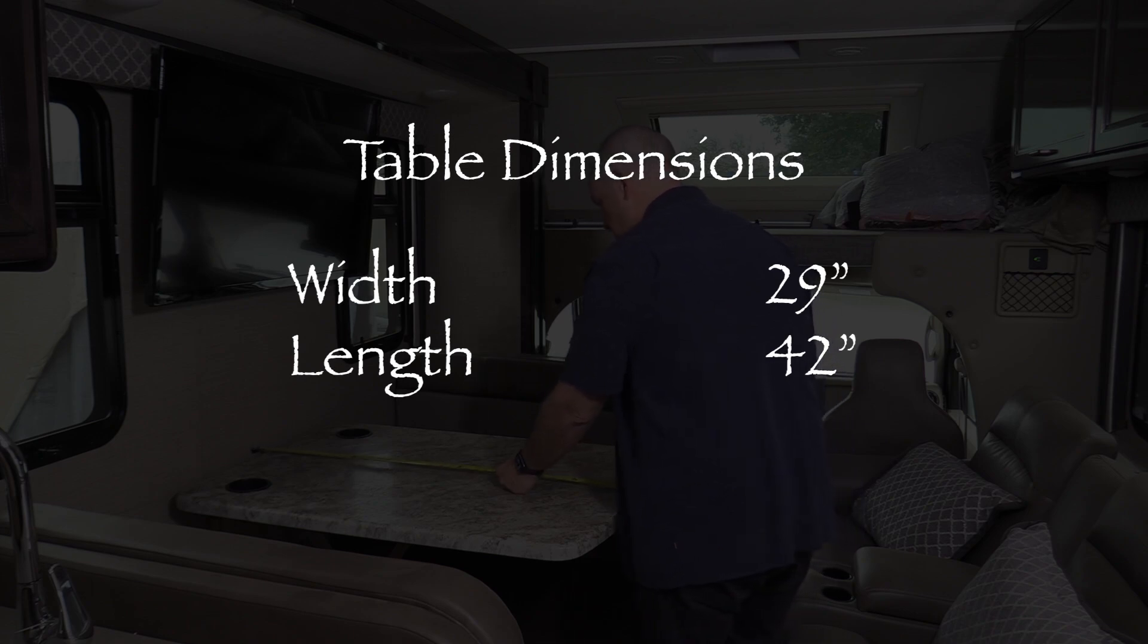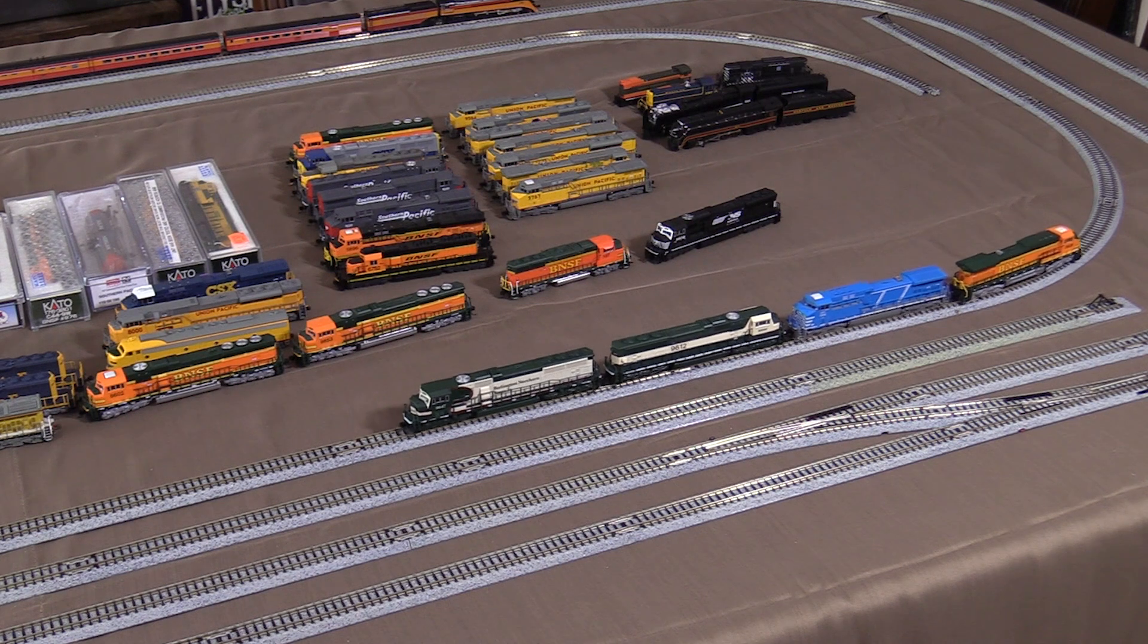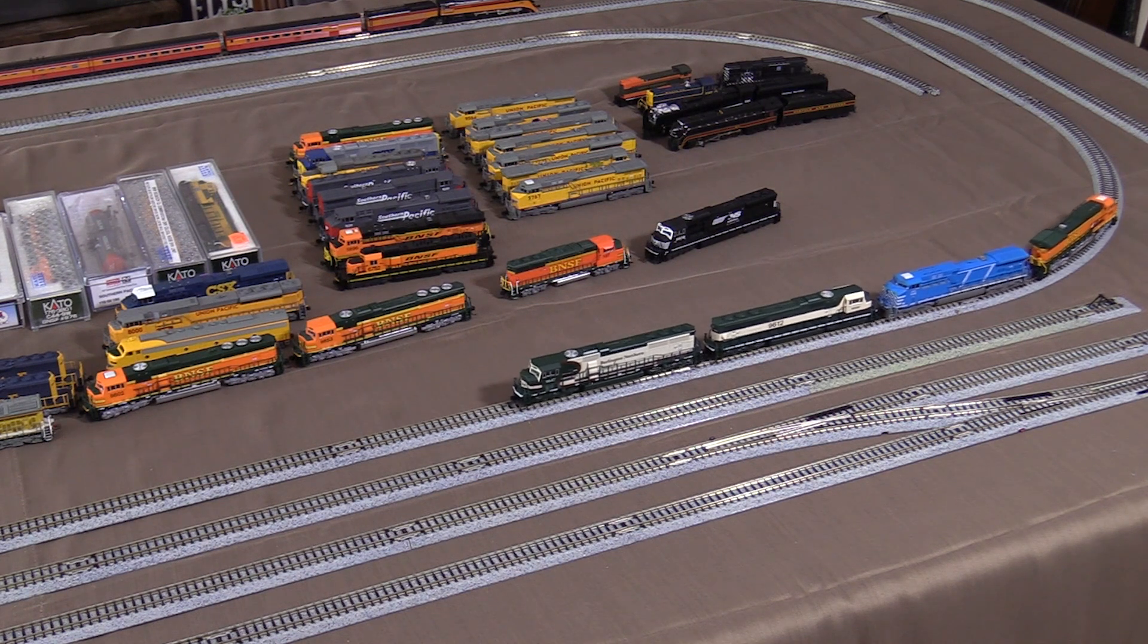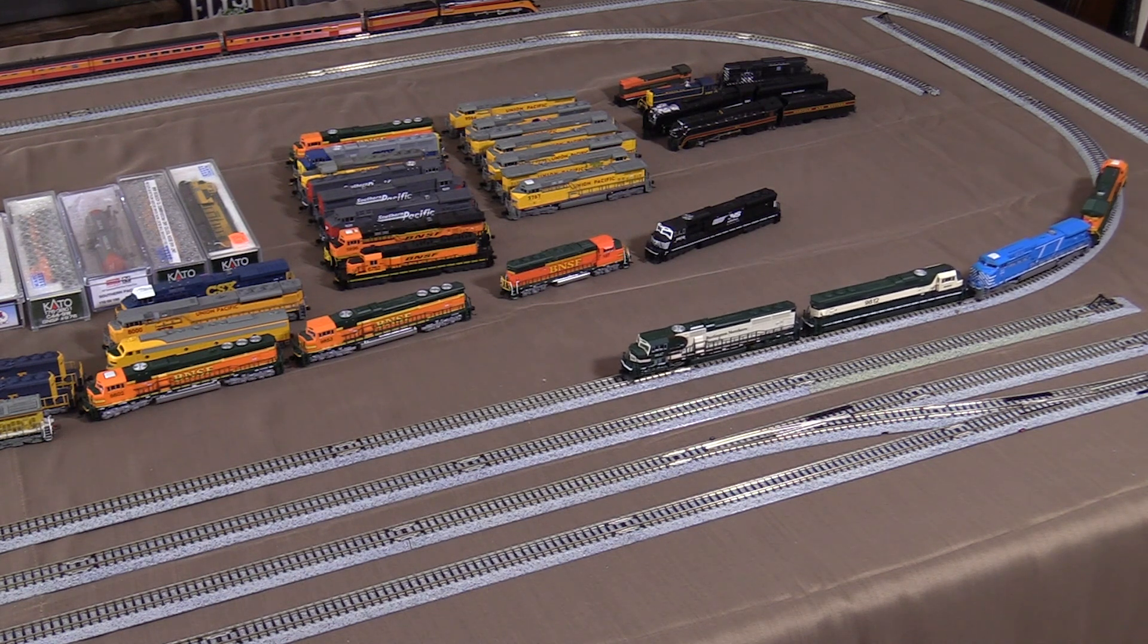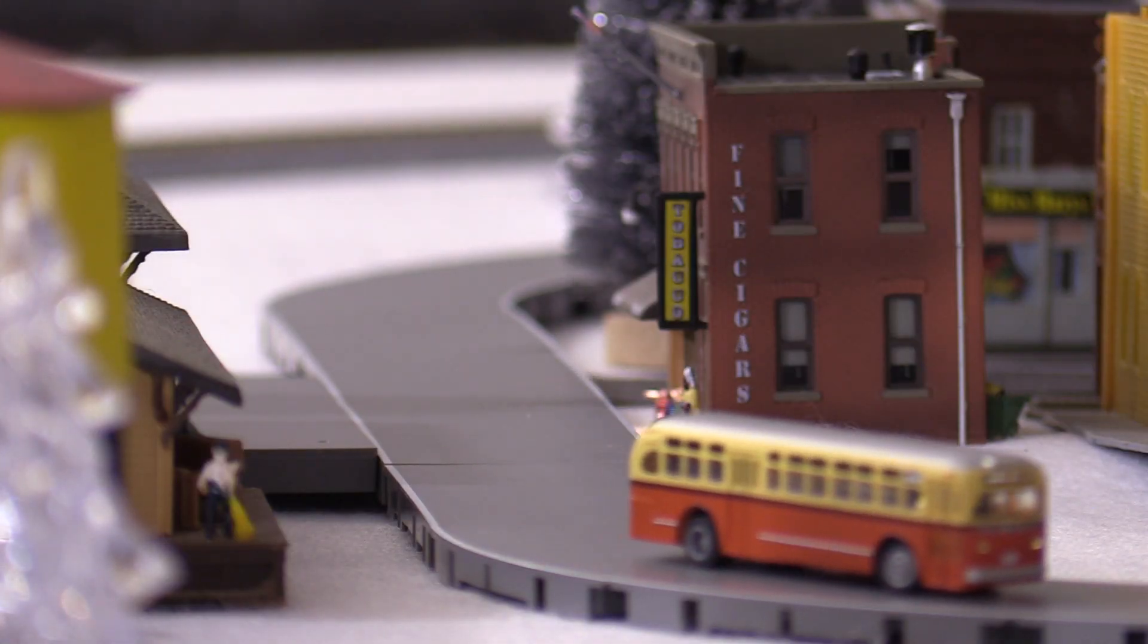Out of necessity, the plan needs to be small. The dinette table measures 29 inches wide and 42 inches long. Initially, I made those the measurements for the layout. I chose N as the scale because it suits the small size of the layout. I have a lot of N-scale equipment already, as well as a bunch of structures and structure kits that have been languishing in boxes for years.